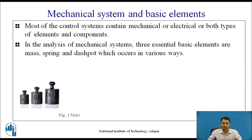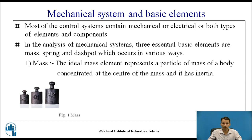The first element is mass. The ideal mass element represents a particle of mass of a body concentrated at the center of the mass, and it has inertia. In the mathematical model of a mechanical system, the mass is represented by its symbol.